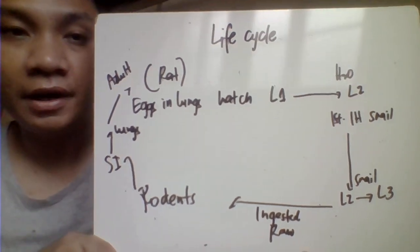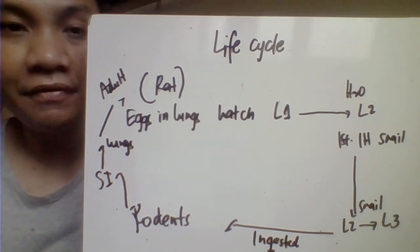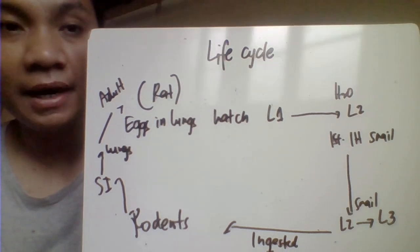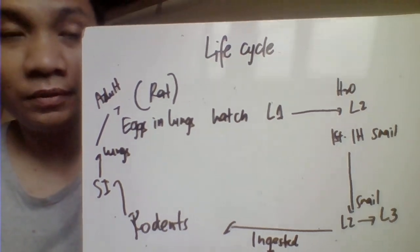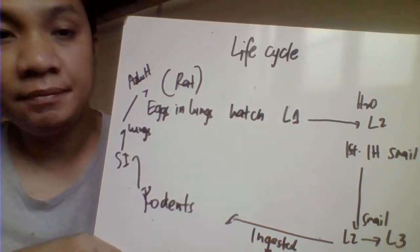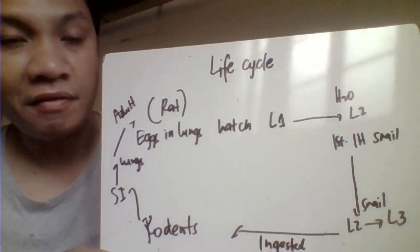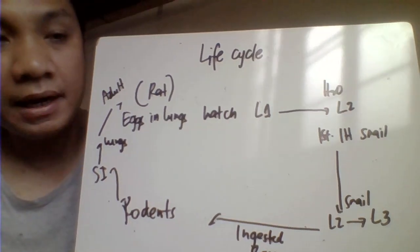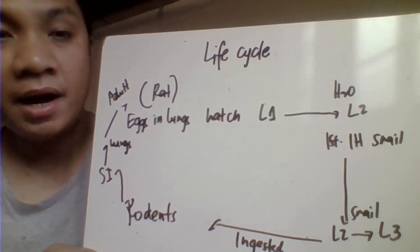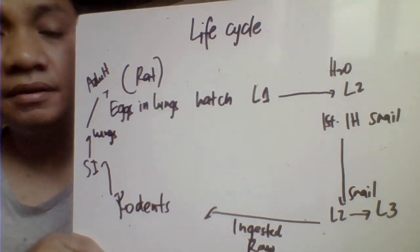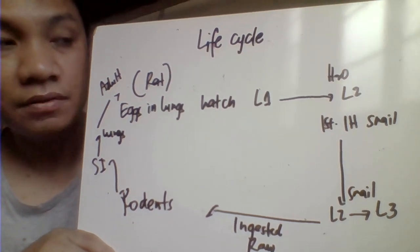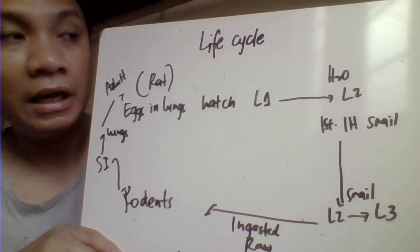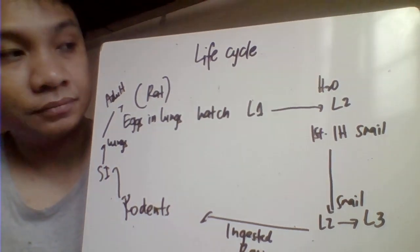For the life cycle of Angiostrongylus cantonensis, rats serve as the definitive host where adult worms lodge in the pulmonary lungs, develop, and the female lays eggs. These eggs hatch in the pulmonary lungs to become L1 larvae. The L1 larvae are swallowed back through the esophagus, pass through the small and large intestine, and are passed out in feces, going to water.